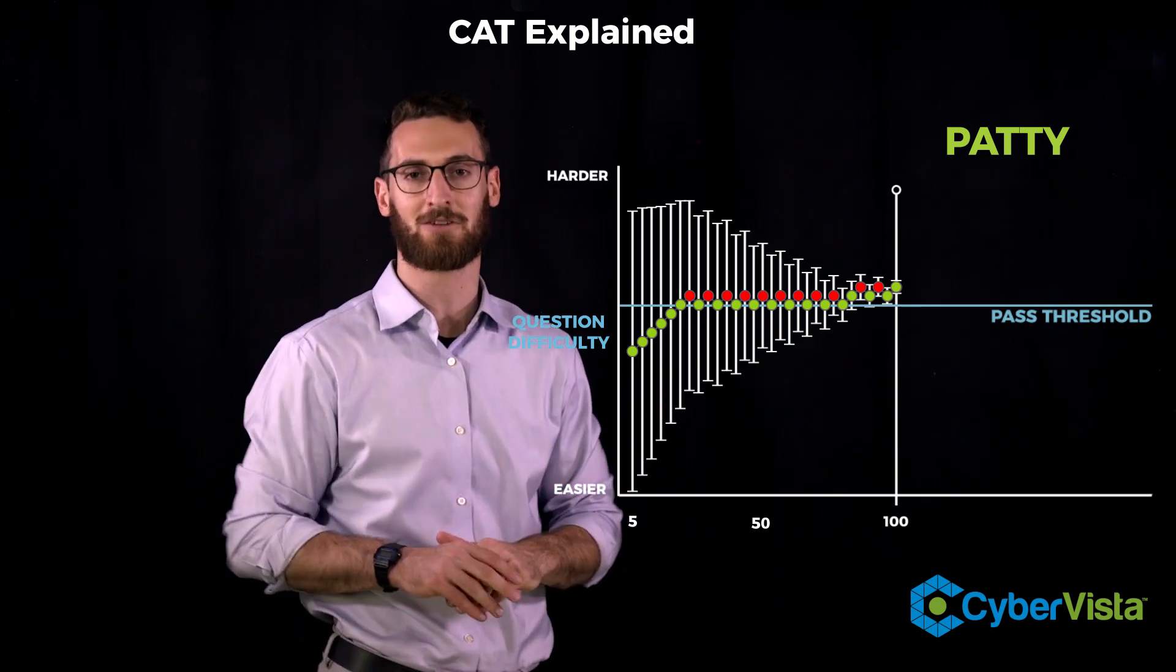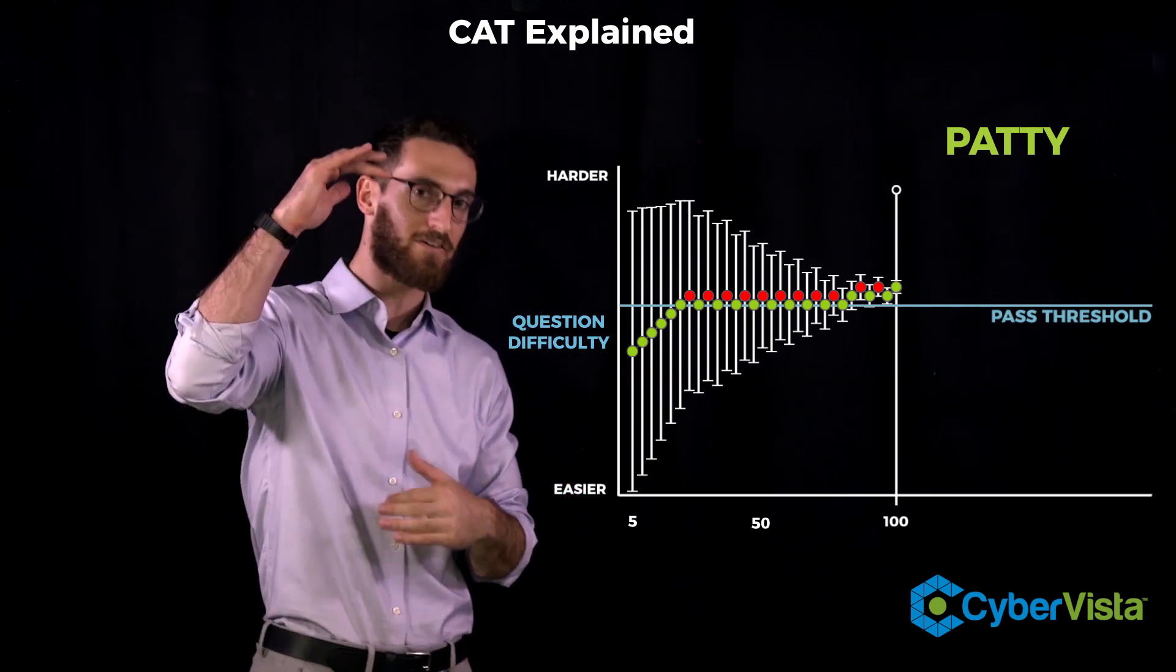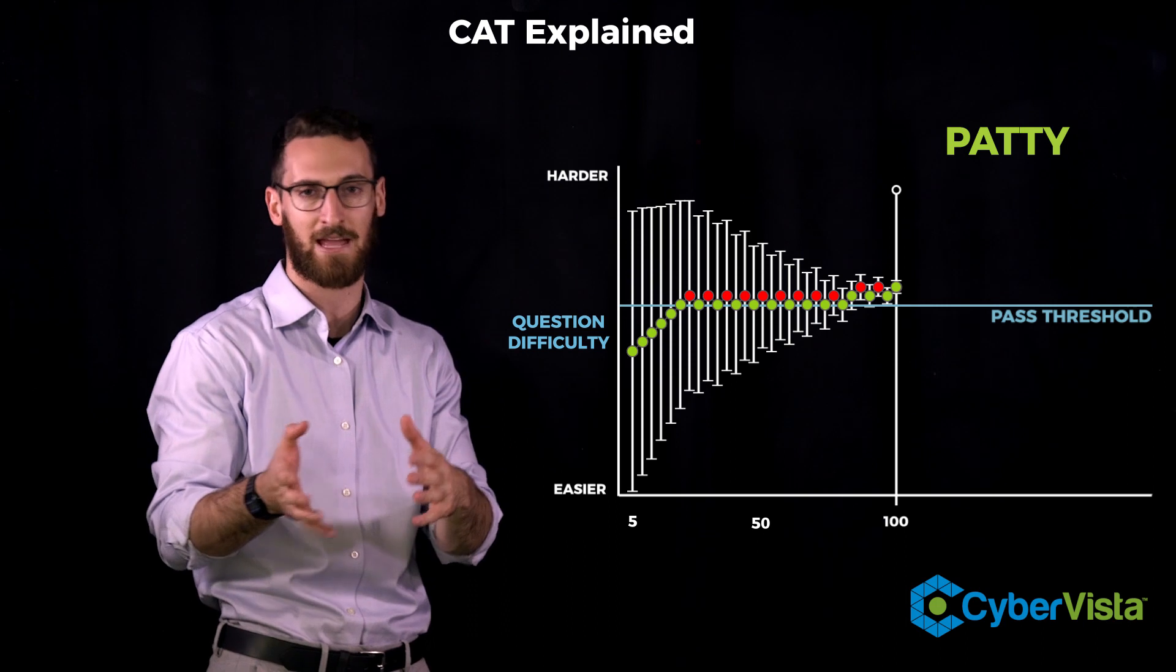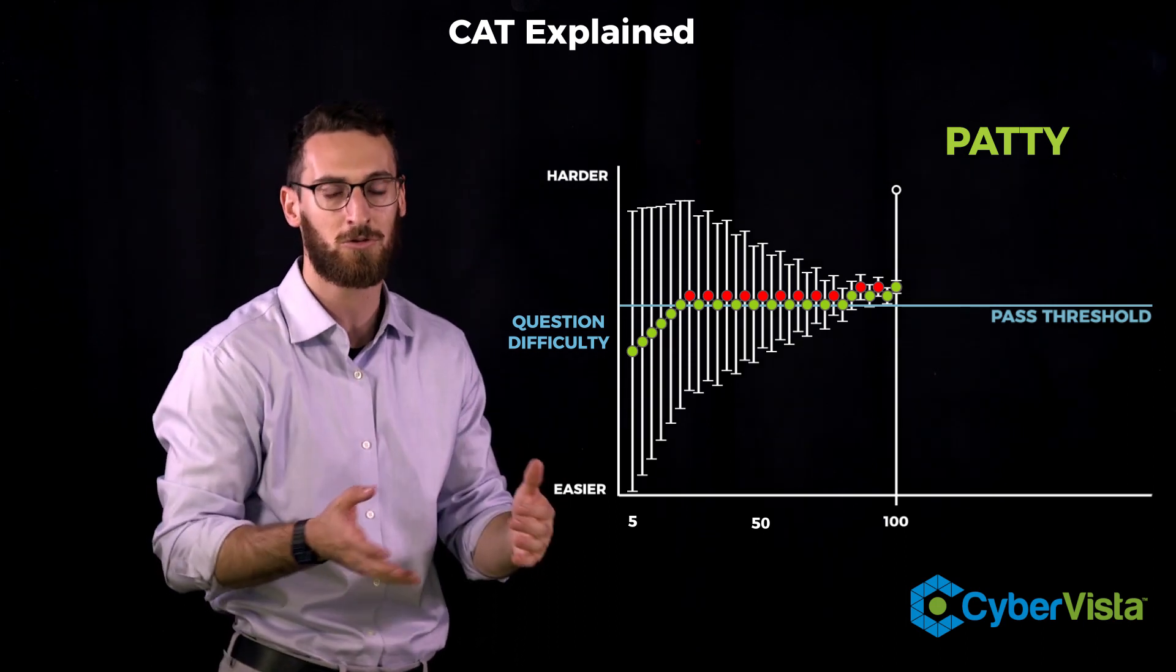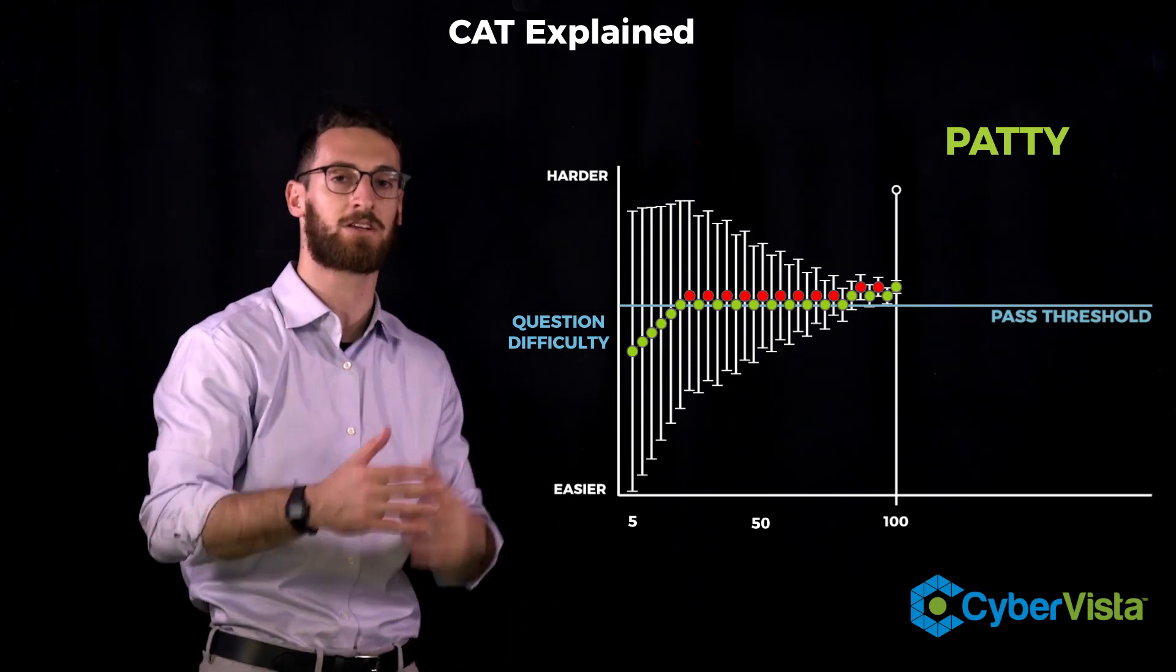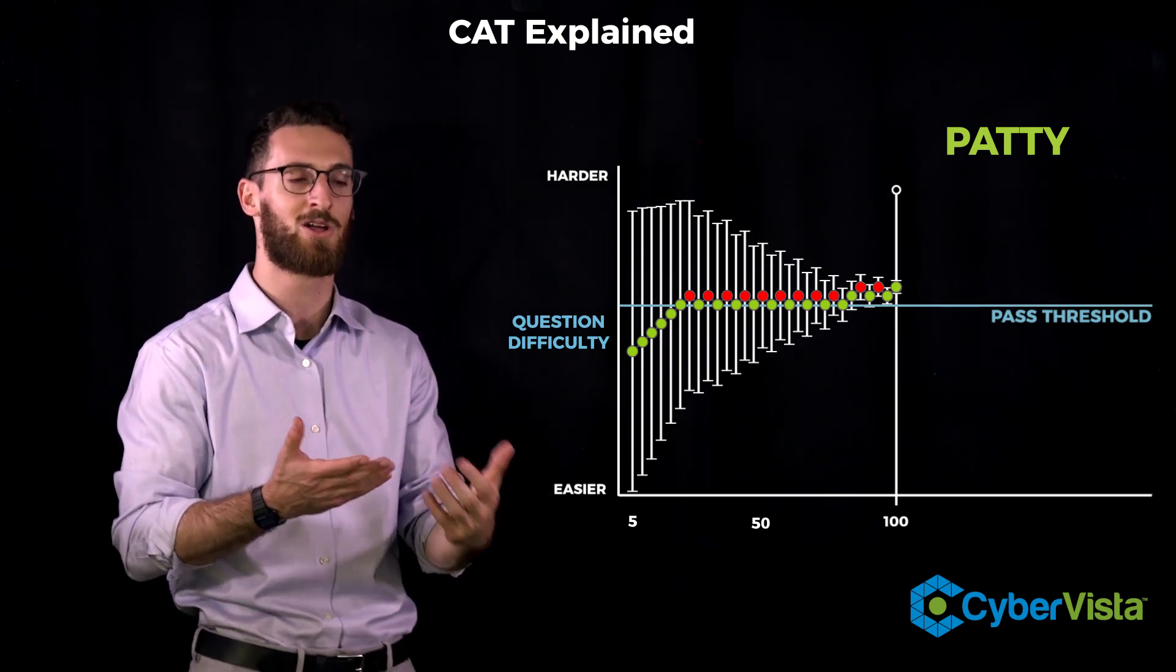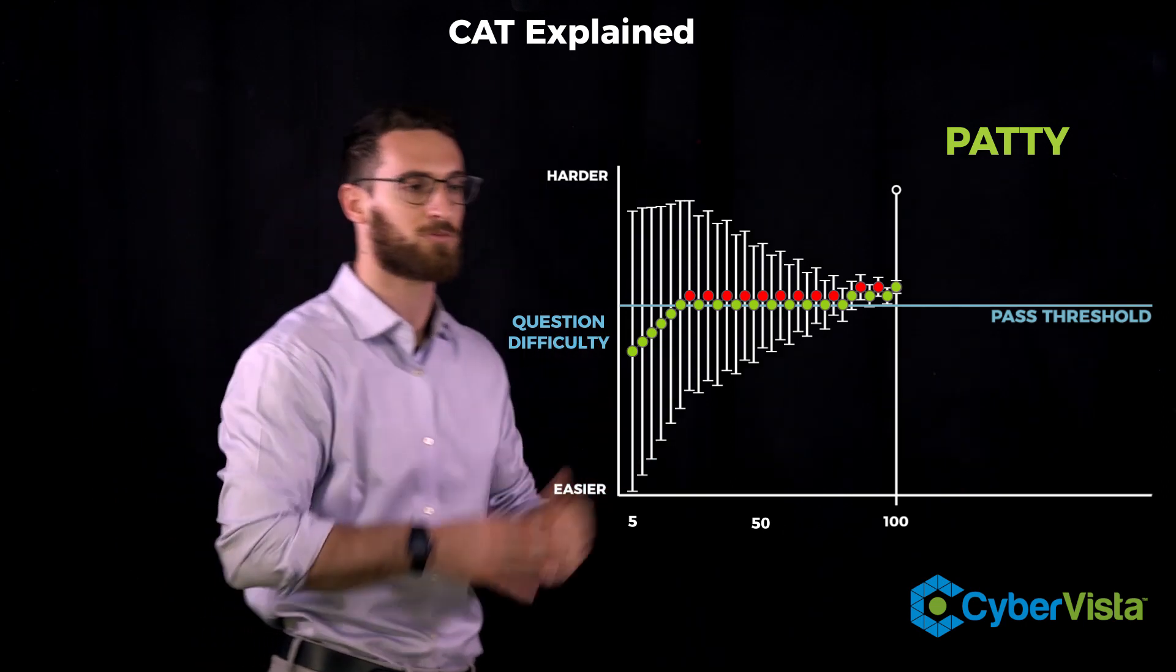So again, the confidence interval is basically the computer saying, I am 95% sure that this person is in that range. Now, if we were to look at that range early on, like question one or two, it's obviously a huge range and it straddles the pass threshold. So that's not really helpful to figure out if somebody is going to pass or not.